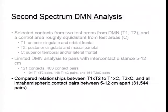For our second spectrum DMN analysis, we again compared relationships between the same regions as with our raw intracranial EEG data, but this time also included all intra-hemispheric contact pairs between 5 and 12 centimeters apart — the same intercontact distances as before. This gave us 31,544 possible contact pairs across the nine patients.